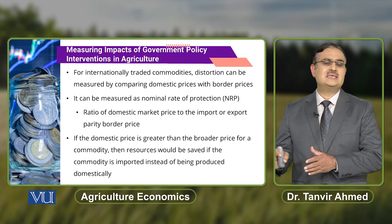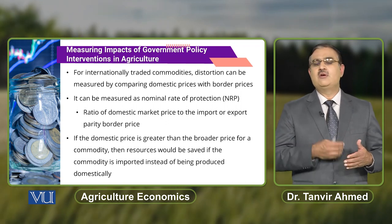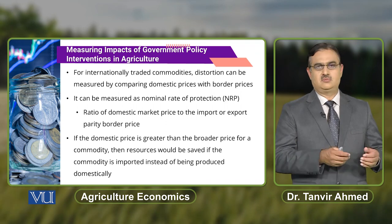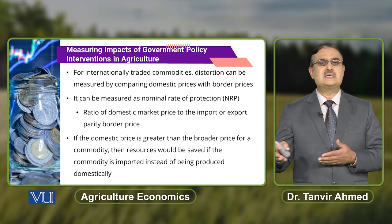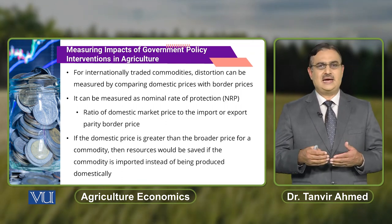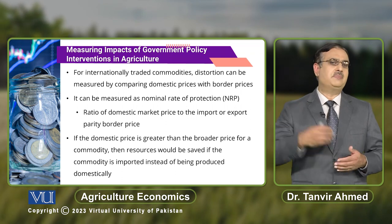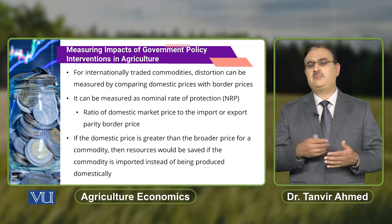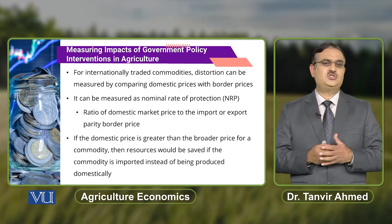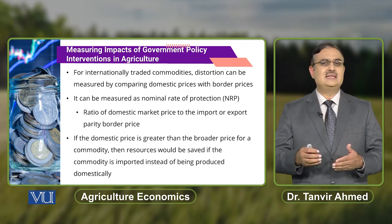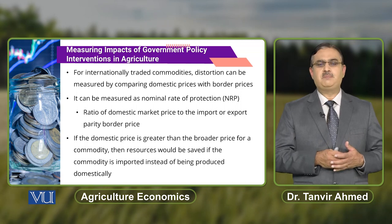So, government policies have some impact on the pricing of agricultural commodities through macroeconomic policies, trade policies, and restrictions on the prices of inputs and outputs. Agricultural output prices, if positive, can have an impact on the income of the farmers. Government policy interventions in agriculture is a phenomenon being followed in Pakistan to ensure food security of the people living in Pakistan.